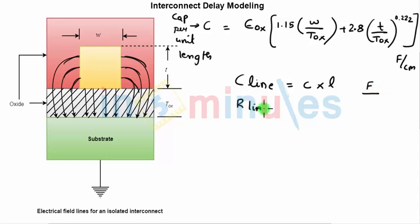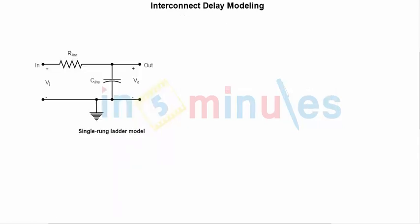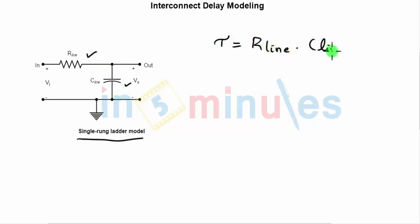From the previous clip, R_line equals small r into L, and here C_line equals small c into L. If we find the values of R_line and C_line, we can construct a circuit model called a single rung ladder model — a ladder of R and C. The time constant Tau equals R_line into C_line, which is small r into L times small c into L, giving Tau equals r·c·L².